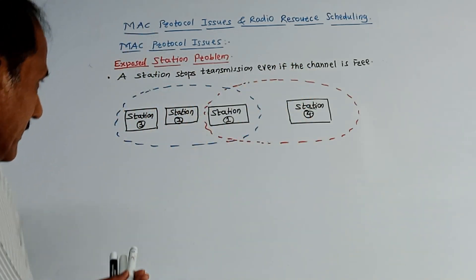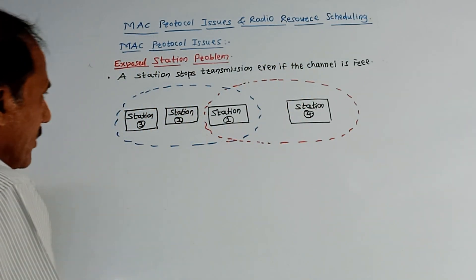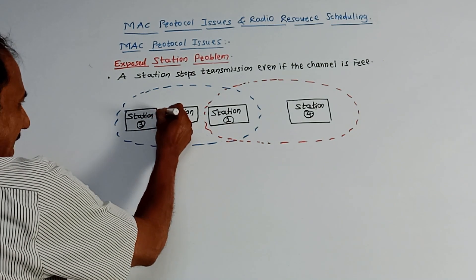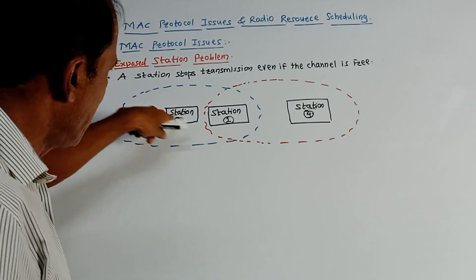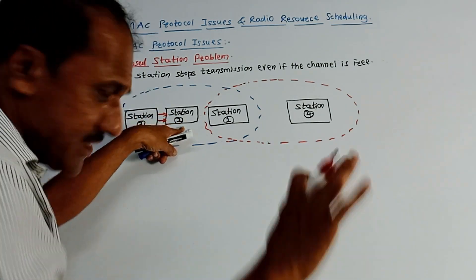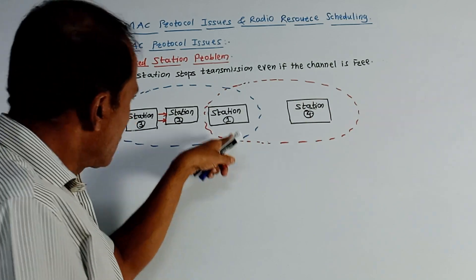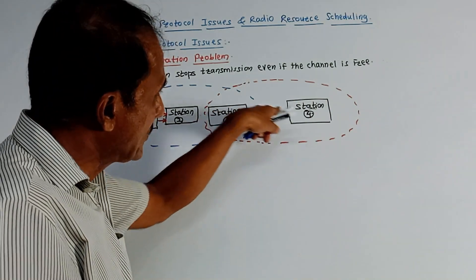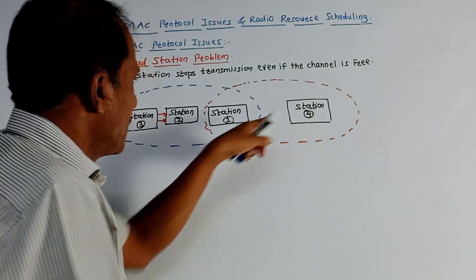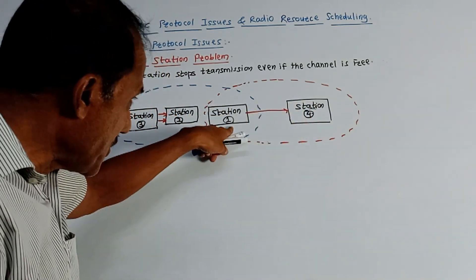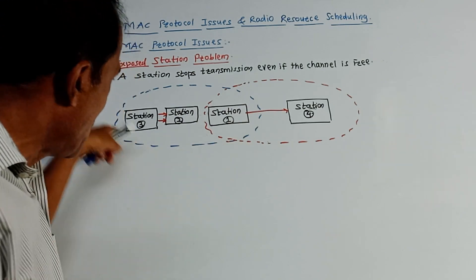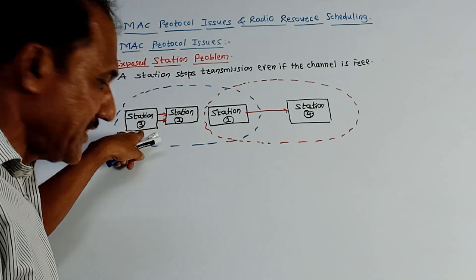Now suppose the transmission is going on between station 2 and station 3. That means, let us assume that station 3 is transmitting data to station 2. This is going on in process. At the same time, suppose station 1 wants to send the data to station 4. This channel is free, it is available, but station 1 is in the same range as that of station 2 and station 3.